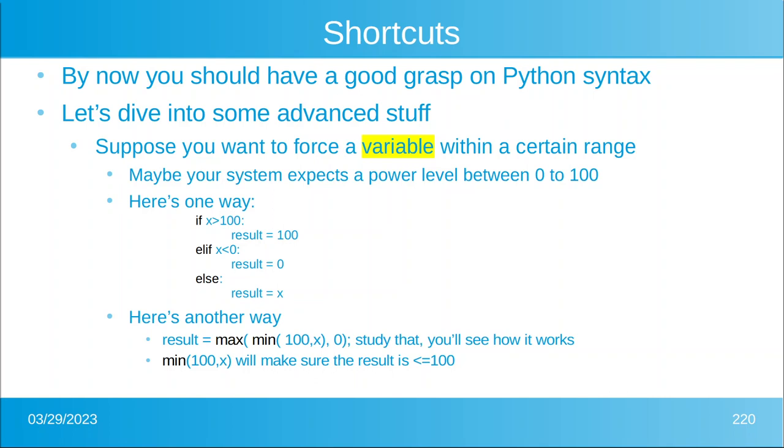Suppose that you want to limit a number to be between 0 and 100. Well you could use this. If x is greater than 100, result is 100. If it's less than 0, result is 0. Another way is just to say result equals the max of the min of 100, x and 0. If you study that, you could see that the result will always be between 0 and 100.